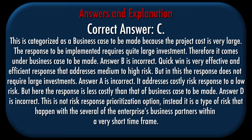Correct answer: C. Explanation: This is categorized as a business case to be made because the project cost is very large and the response to be implemented requires quite large investment. Answer B is incorrect — quick win is a very effective and efficient response that addresses medium to high risk, but does not require large investments. Answer A is incorrect — it addresses costly risk response to a low risk, but the response cost is less than that of business case to be made. Answer D is incorrect — contagious risk is not a risk response prioritization option; instead it is a type of risk that happened with several of the enterprise's business partners within a very short time frame.